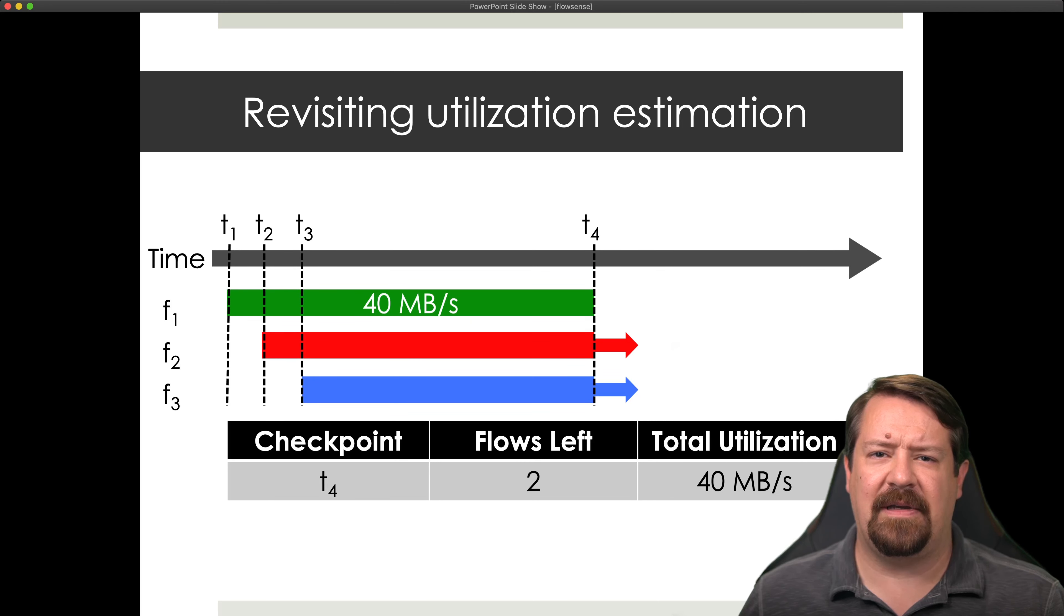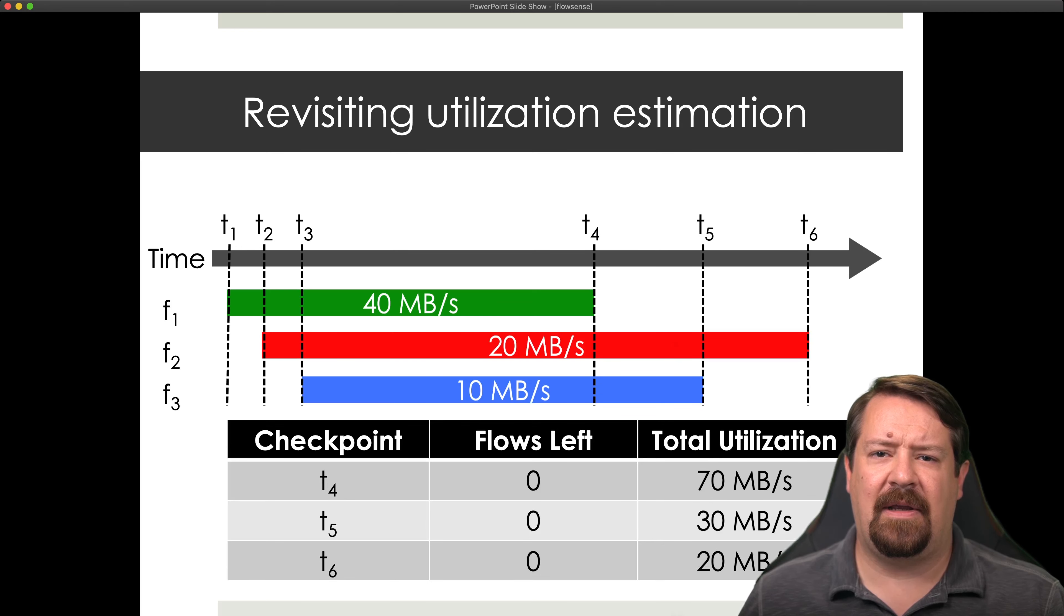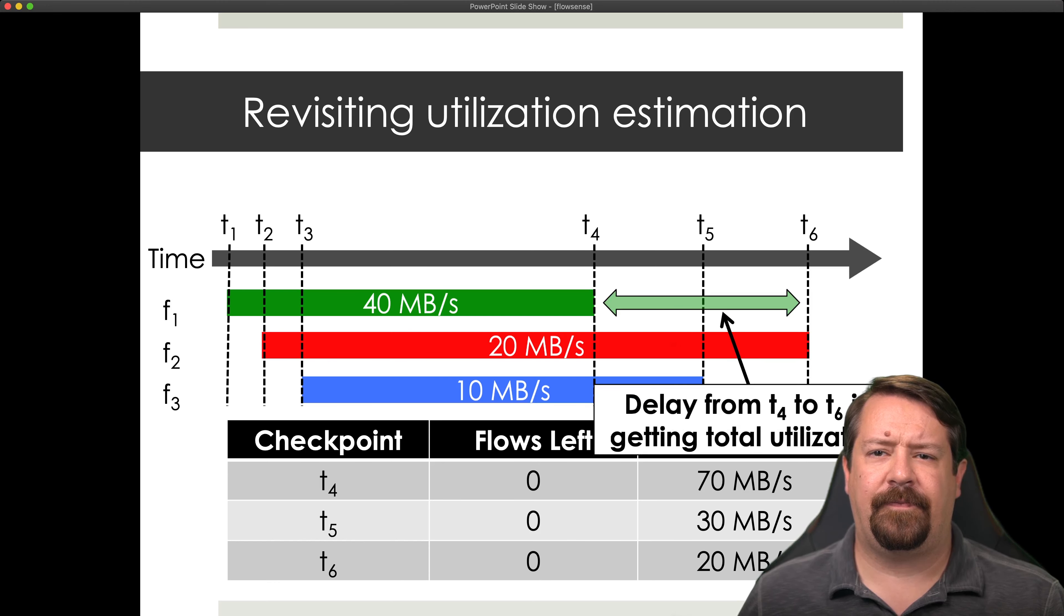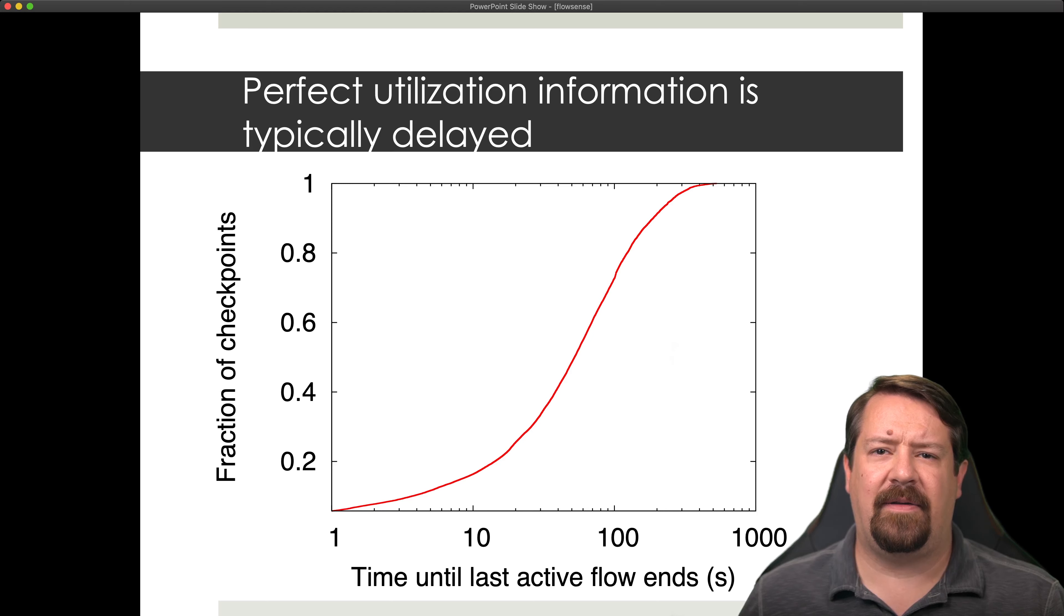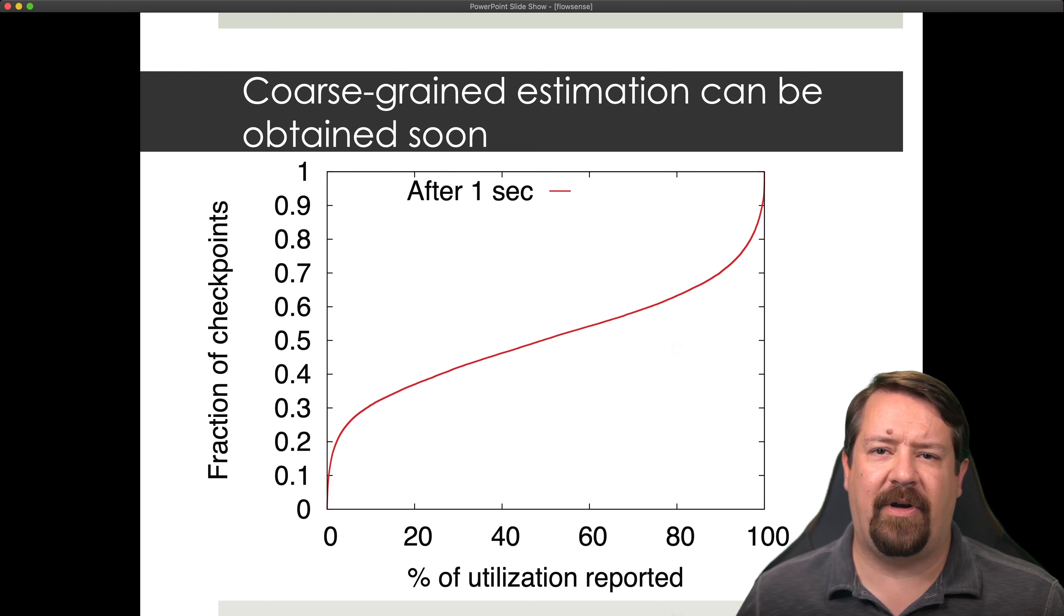Looking at the utilization estimate example from earlier, we have our three flows of different durations. And we observe that we have this delay in getting the total estimate between the time that the first flow ended and the time that the last flow ended. So we can generalize from that that getting the full utilization information is typically delayed, and it's going to be a function of the duration of the flows in time. So if we know the duration of our longest flow, then we know that our delay can't be any longer than that. And here they're using a CDF to show in general the shape of these flows, and so the corresponding duration until they get full details on the utilization. So from this, we can see that within about 100 seconds, 80% of the checkpoints are fully known. But the question is, what if you don't have 100 seconds to wait?